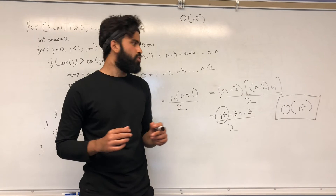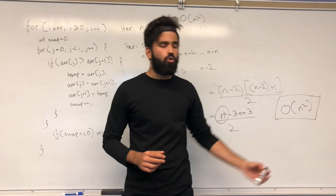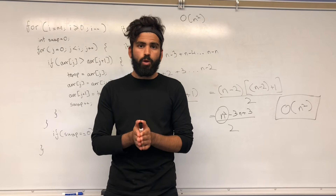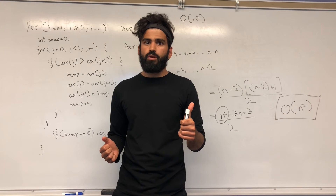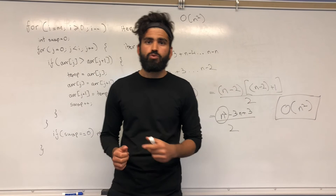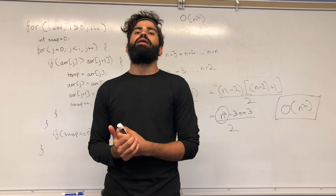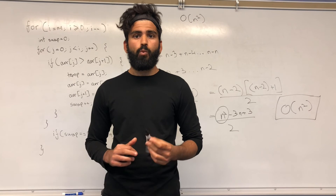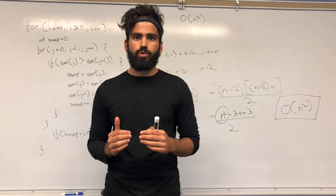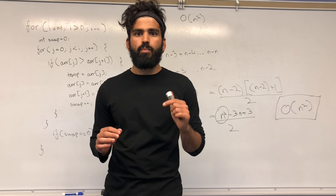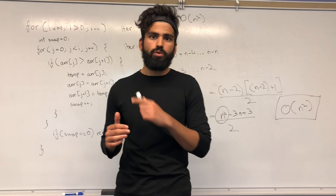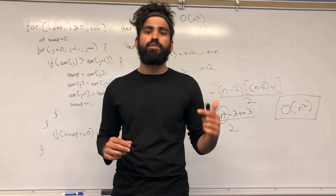If it bugs you why the minus three n term wasn't accounted for in the O(n²) result, you need to look deeper into how big O works — I'll do a video on that soon. This is it, guys. We went through the concept of bubble sort, wrote the code, made it more efficient, and proved the time complexity. Please subscribe, drop questions in the comments, and I'll post a GitHub link with the code so you can play around with it.